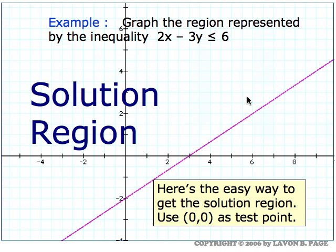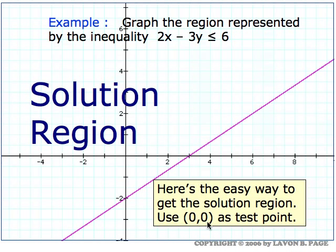Suppose you've graphed the straight line and you know that the solution region is going to be the points on one side or the other. The easiest way to tell which side the solution region will be on is to use the origin as a test point. Substitute x equals zero and y equals zero. The inequality reads zero less than or equal to six — that's a true statement. So the point x equals zero, y equals zero does satisfy the inequality, meaning this point is in the solution region. That's evidence that the solution region consists of the points on this side of the line rather than the other side.